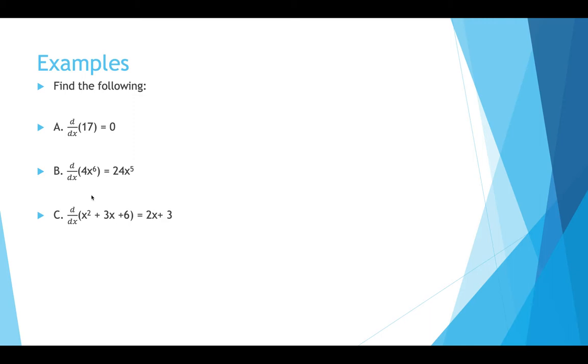d dx of 4 times x to the 6 – we're going to take the 6 and multiply it by the 4 to get 24, and take the power down by 1 to get to the 5th power.